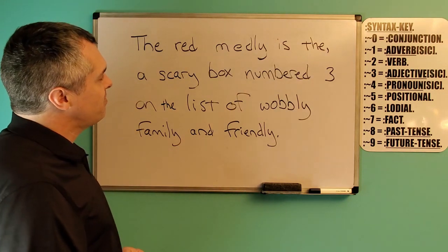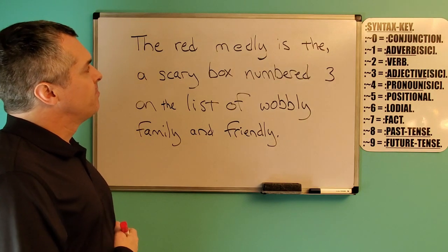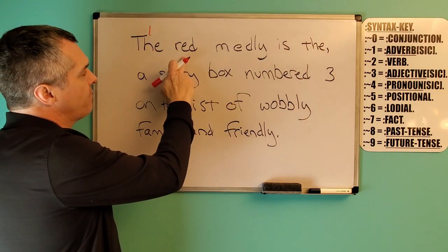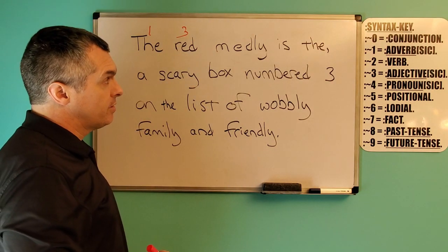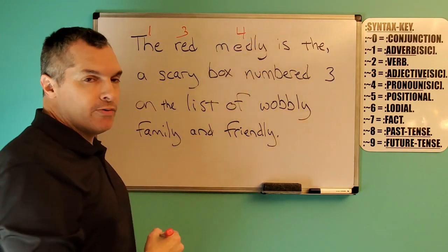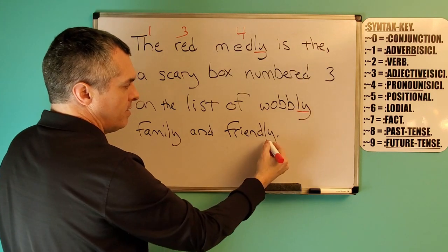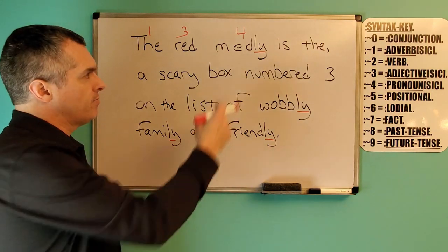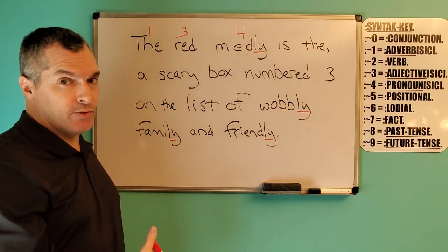Thank you, brother! So let's begin. Again, this is going to be detailed, so bear with me. We have the non-tangible contract adverb 'the,' modifying tangible contract word 'red' into an adjective, which is coloring the non-tangible contract word 'medley' into a pronoun. Now, this is what the LY does — the LY is so poisonous that it can take a tangible contract word like metal, wobble, or friend and modify it into a non-tangible contract condition of state.